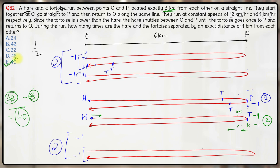The answer is option E, 40. In summary: the hare covers 12 to-and-fro rounds, totaling 24 one-way trips. For each trip it would normally be 1 kilometer from the tortoise twice, giving 48 instances. But during the 1st, 2nd, 6th, 7th, 11th, and 12th to-and-fro rounds, instances are lost — 8 in total — leaving the final answer of 40.